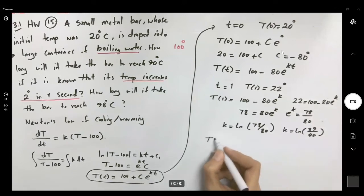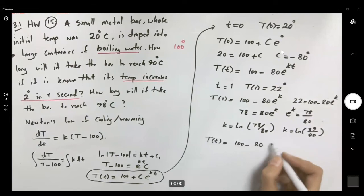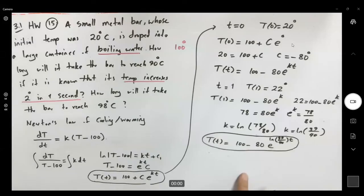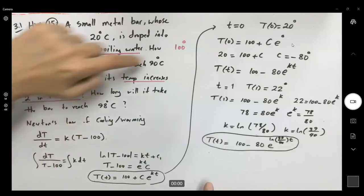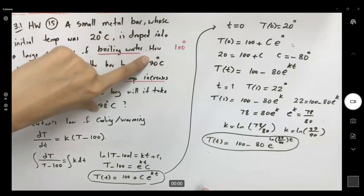Our model t of t becomes 100 minus 80 e to power ln of 39 over 40 times t. Now that we have the model, we can easily find the time that it reaches to 90 degrees and then 98 degrees.